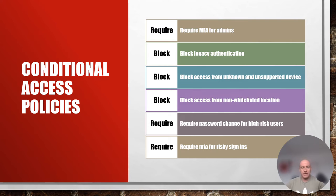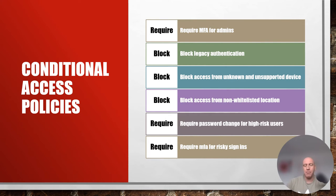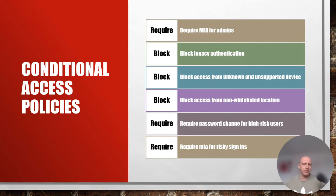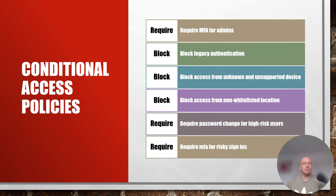There are two risk categories: high risk users and risky sign-ins. We can create conditional access policies based on these. For example, if a user builds a high risk rating over time, we can ask them to change their password, suspecting that threat actors may be trying to compromise it. During sign-in, if a risky sign-in is detected, we can generate a challenge based on risk level — if it's medium or high, we require the user to complete an MFA challenge before accessing our enterprise applications. This greatly reduces the potential risk of accounts being exploited and threat actors logging into our enterprise applications.